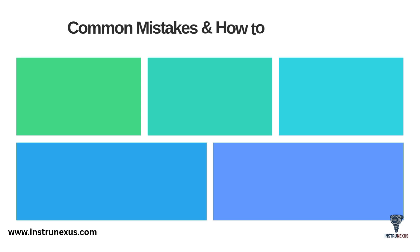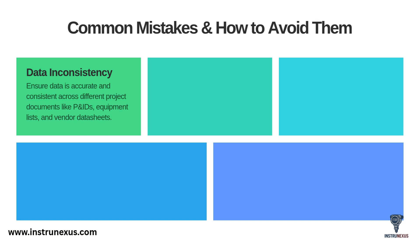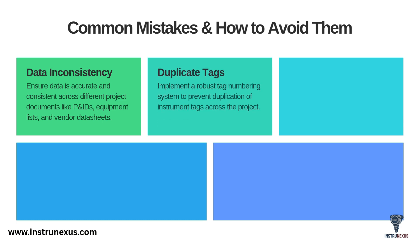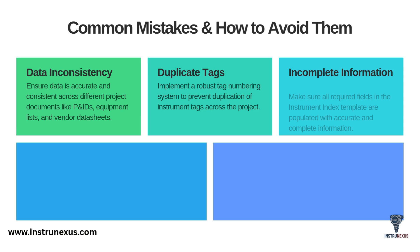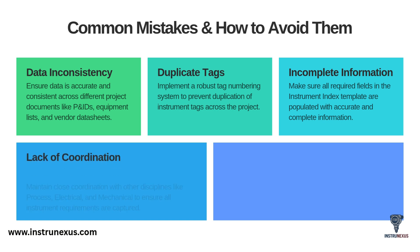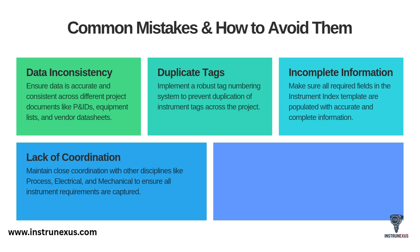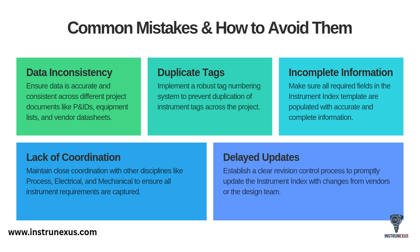Preparing an index of this scale is difficult, and there are several common mistakes to watch out for. First is data inconsistency — when your P&ID says one thing and your index says another; you must ensure data is accurate and consistent across all documents. Second, duplicate tags — a critical error you can prevent by implementing a robust tag numbering system. Third, incomplete information — make sure all required fields in your template are populated with accurate and complete information. Fourth, lack of coordination — you must maintain close coordination with the process, electrical, and mechanical teams. Finally, delayed updates — you must have a clear revision control process to promptly update the index with any changes.